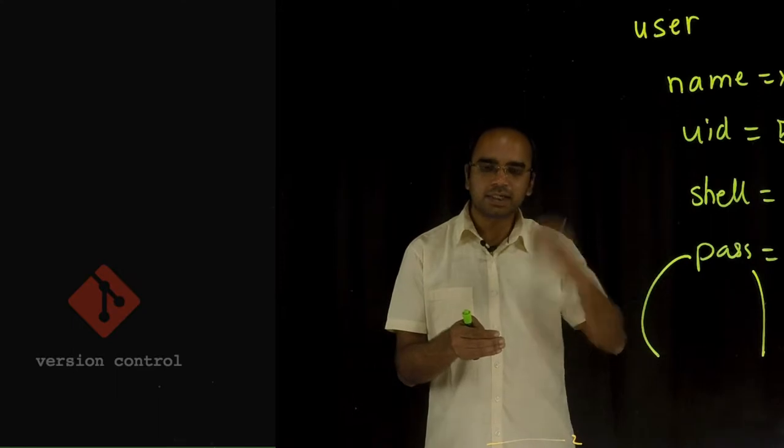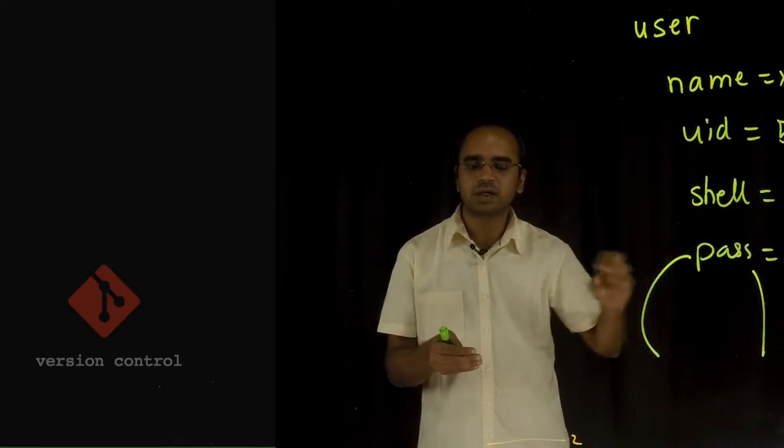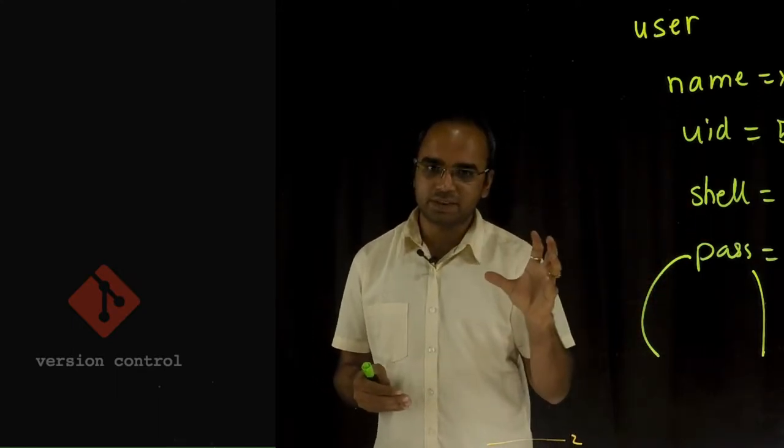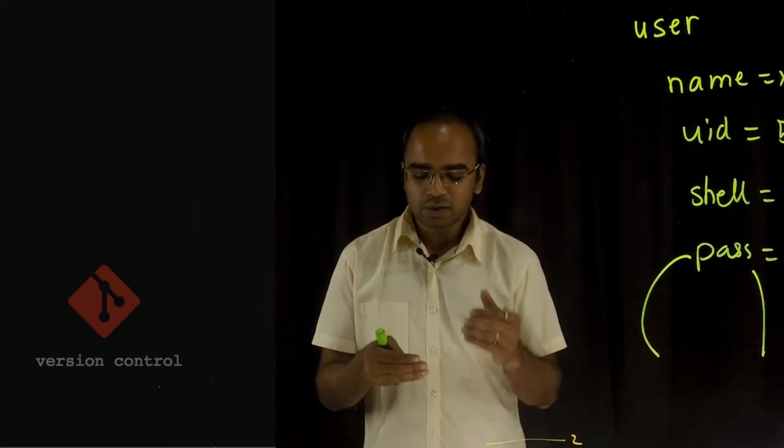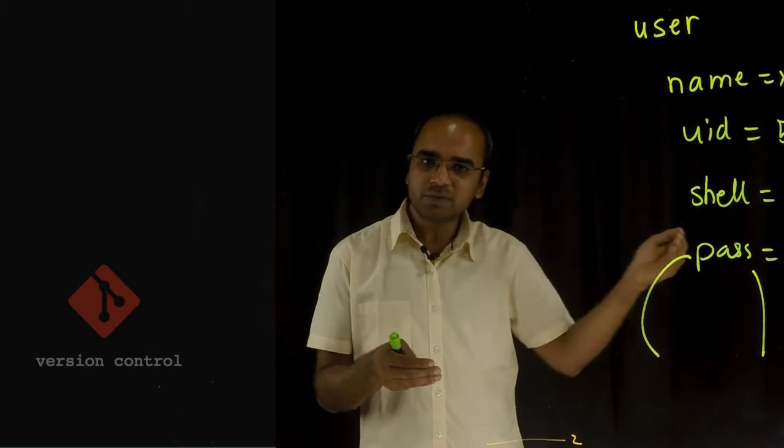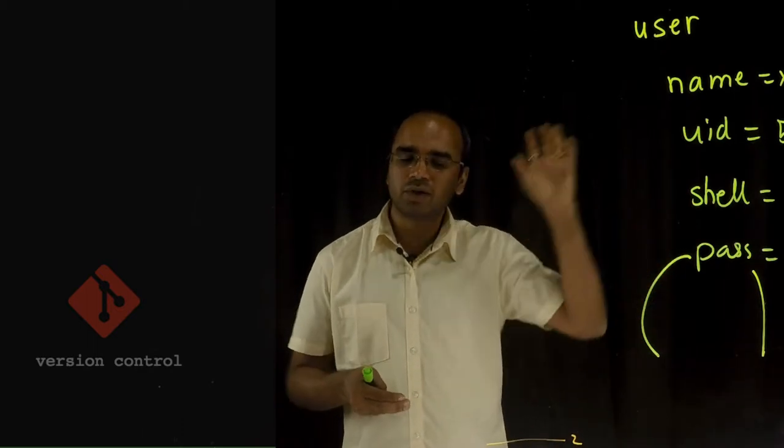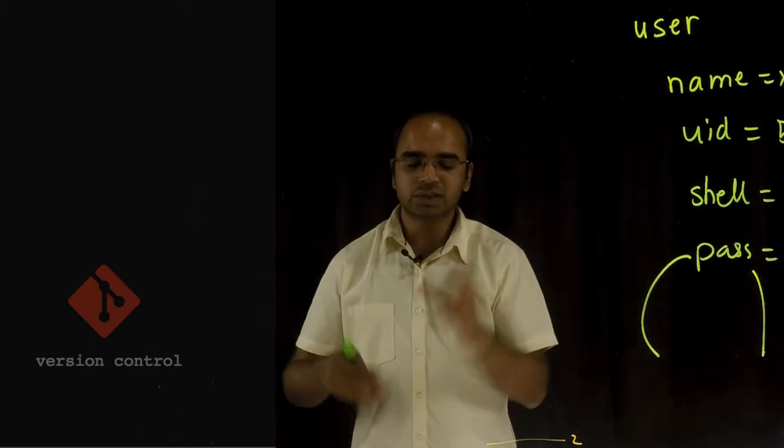That could be Git or SVN or any other revision control system that you have. Your cloud migration becomes easy. If tomorrow you want to migrate to the cloud, if you already have the code, you can just provision the compute instances, take this code, apply it there, and you have your infrastructure.